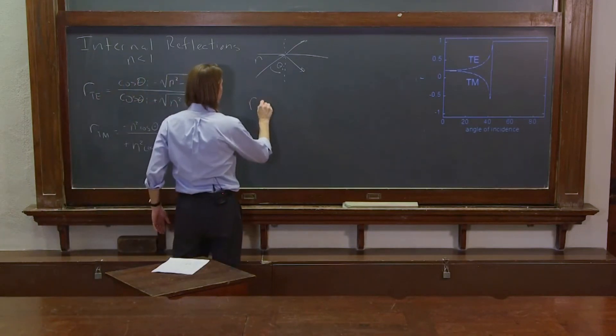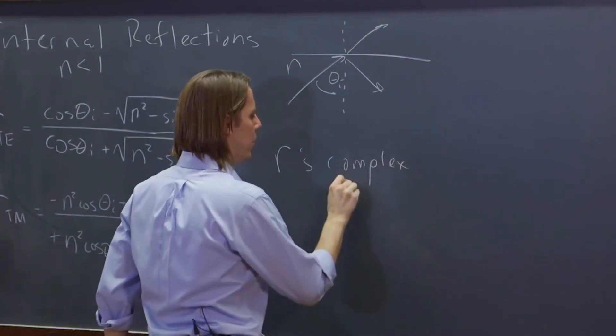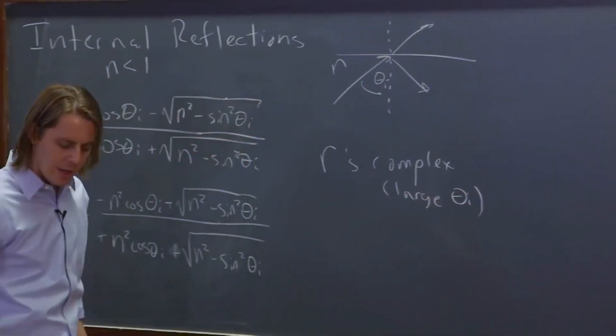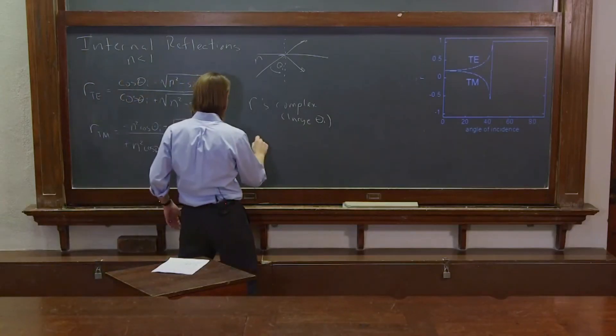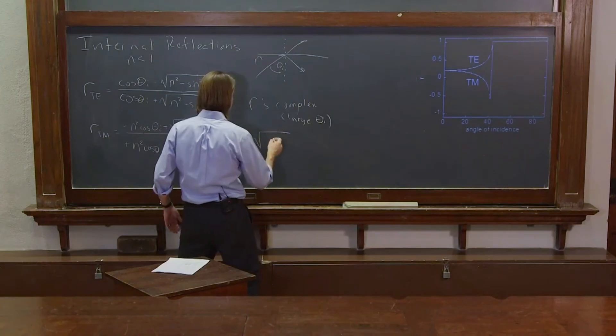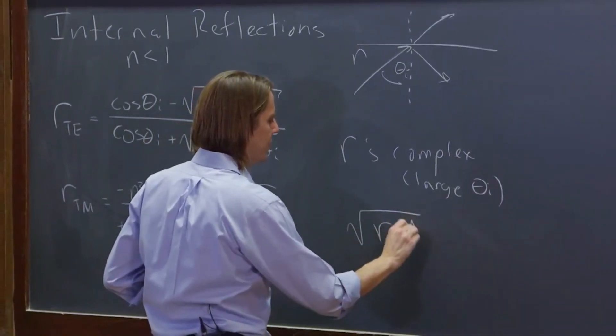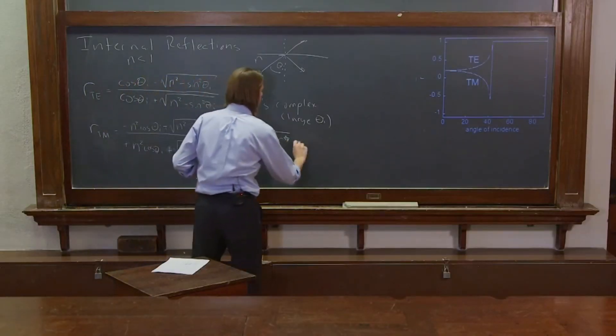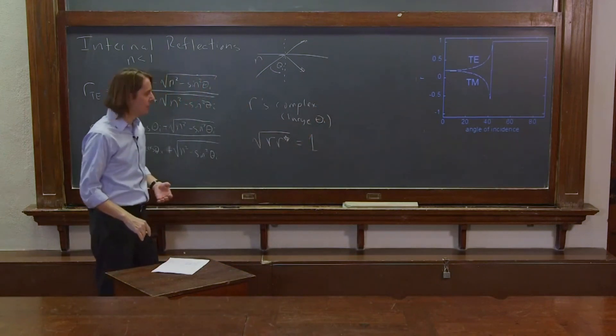So this leads to the r's being complex for large theta i. And we said, well, how do we deal with that? We calculate, rather than just squaring the little r's to get the amount of light, you multiply it by its complex conjugate. And when you do that, you find that it's equal to 1, again, for large angles of incidence.